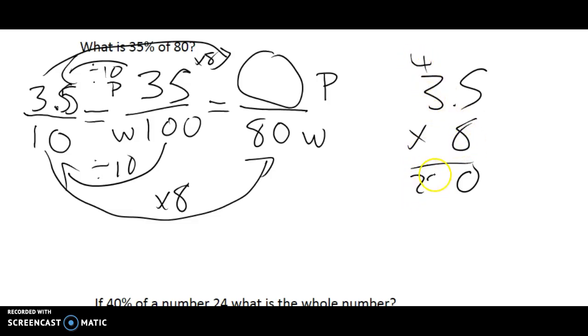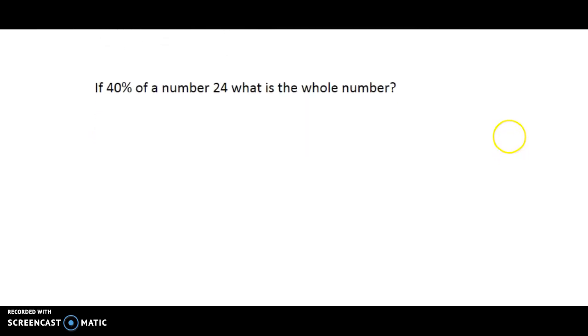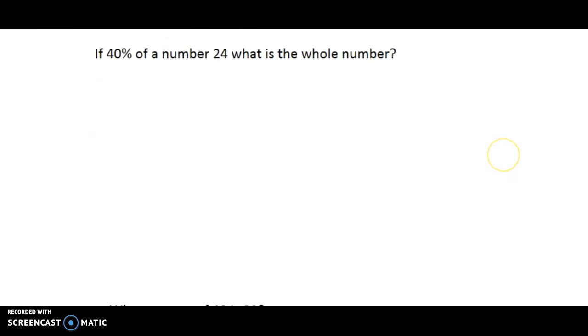Now what I can do is I can multiply this to get 80. So 10 times 8 is 80, and 3.5 times 8, well, I've got to figure that out. So 3.5 times 8: 8 times 5 is 40, I carry my 4. 8 times 3 is 24, plus 4 is 28. I have one decimal place right here in the question. That means one in the answer, and this is going to give me 28.